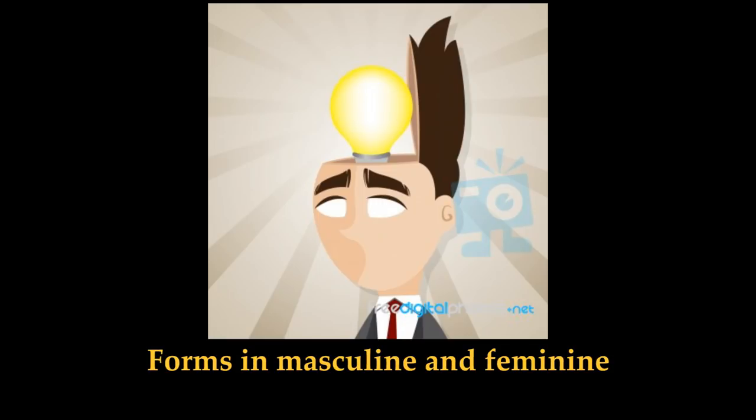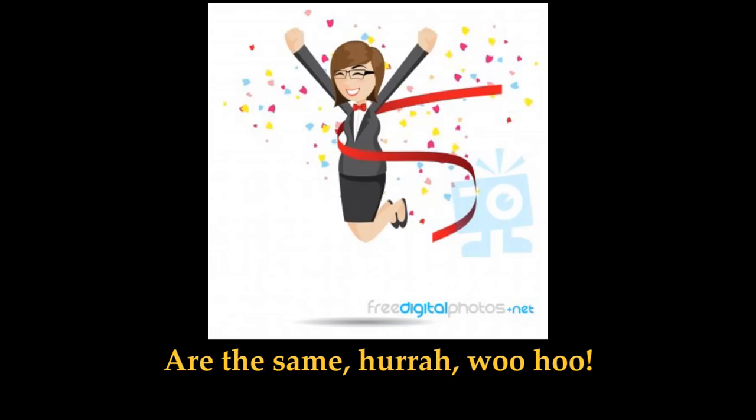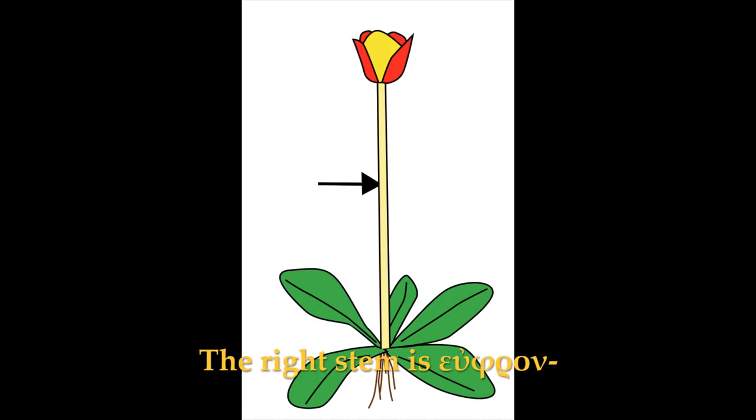Forms for masculine and feminine are the same. Hooray, woo-hoo! The right stem is eugenēs. This is true.